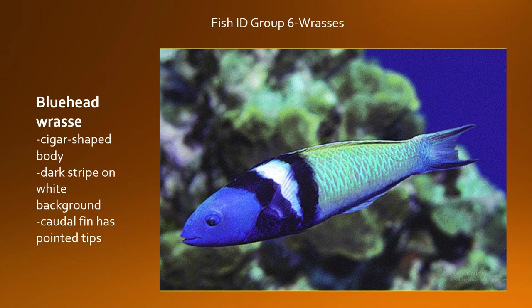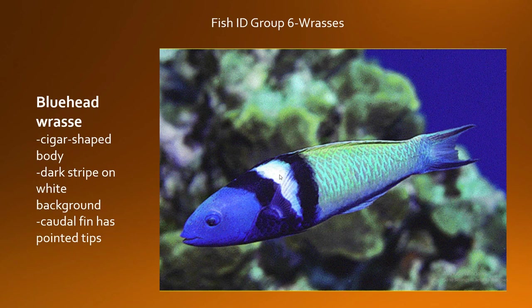Now we're moving into the wrasses. The bluehead wrasse is another extremely abundant member of the reef community. It's very well defined by its streamlined body — it looks like a cigar or a hot dog. What defines the bluehead wrasse, in addition to its blue head, is that black-white-black pattern — that white vertical bar in the middle of its body. Very distinctive and very easy to identify. Its tail fin has those trailing pointed edges, and you'll see these in large numbers continuously moving and buzzing right along the bottom of the reef.